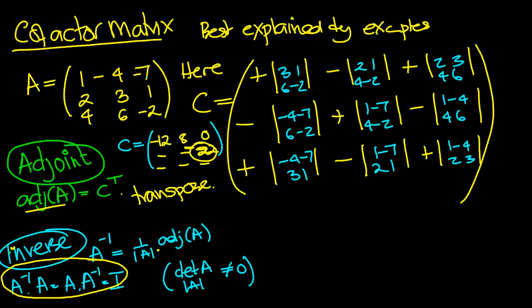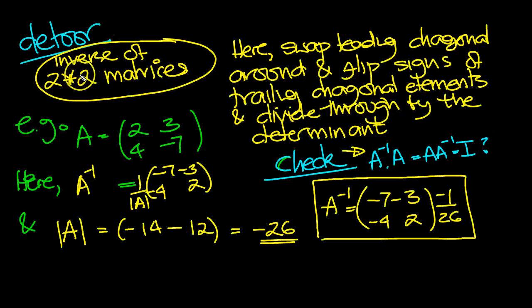So let's have a look at that there. Here it is here. The detour: inverses of 2x2 matrices. So basically here's the method. It's best explained by means of an example.